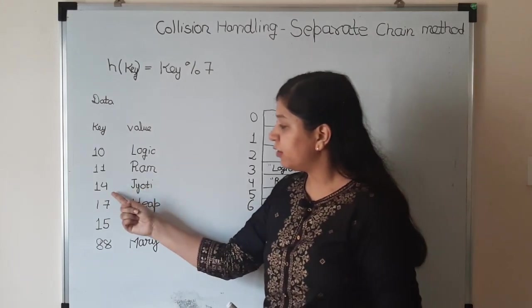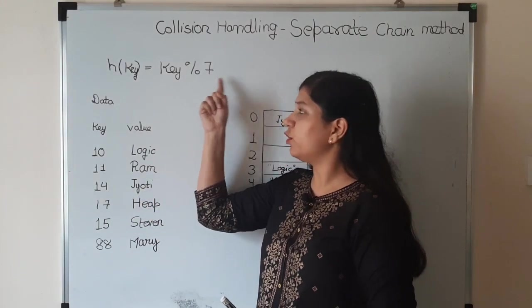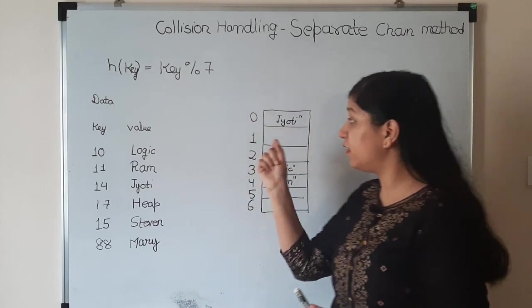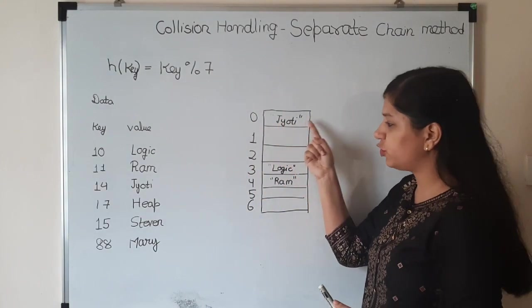Next is 11 Ram. 11 modulo 7 is 4, so we'll go to 4 and put Ram here. Then 14 Jyoti - 14 modulo 7 is 0, so we'll put Jyoti here.